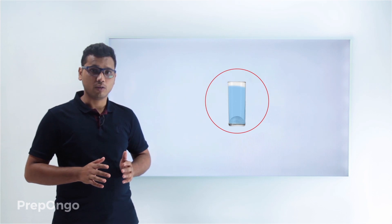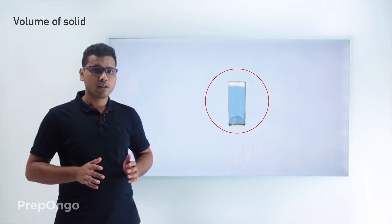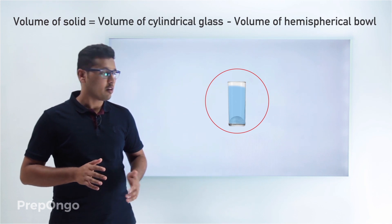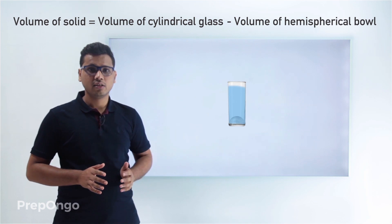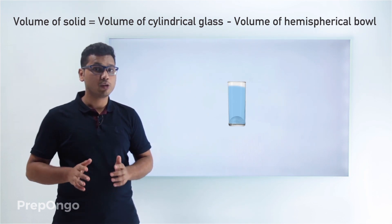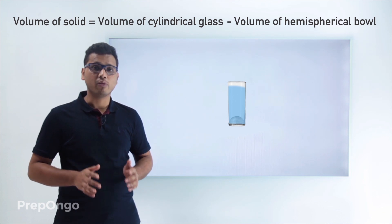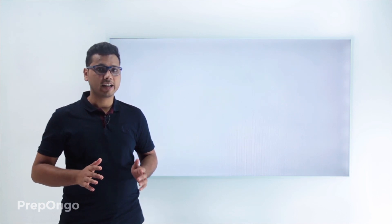Why? Because some of the volume has been occupied by this hemispherical bowl. So if we have to calculate the volume of this solid formed, we can calculate its volume by subtracting the volume of this hemisphere from the volume of this cylinder. So in this case we are getting the volume of the solid formed by subtracting the volumes of the individual solids.